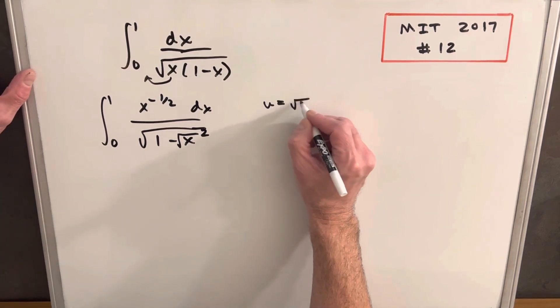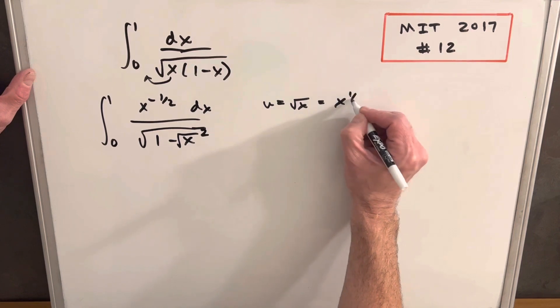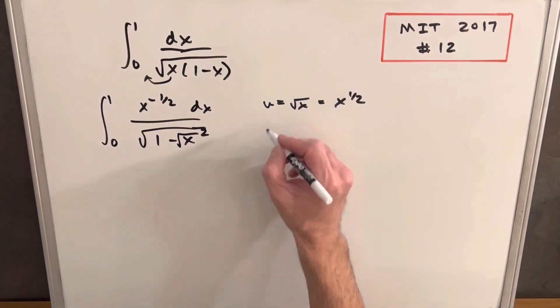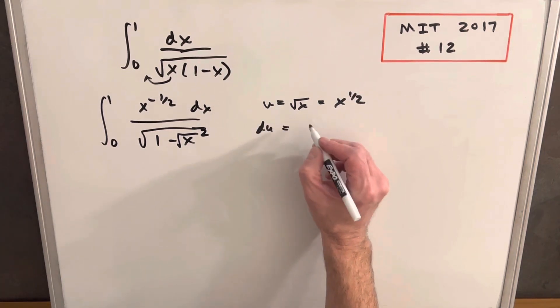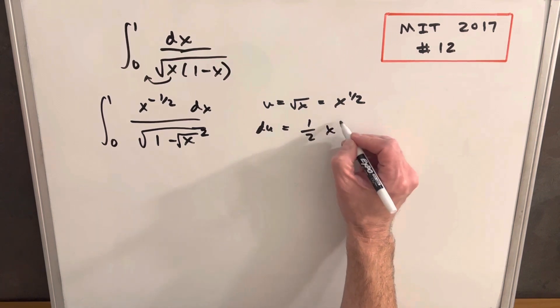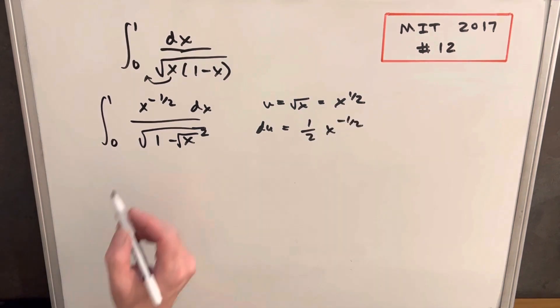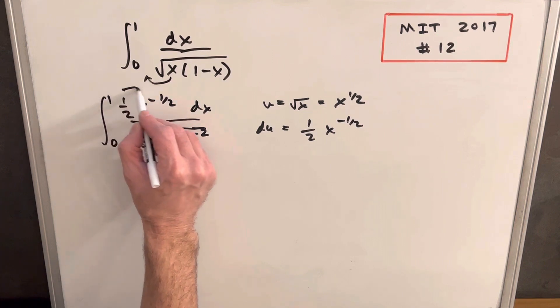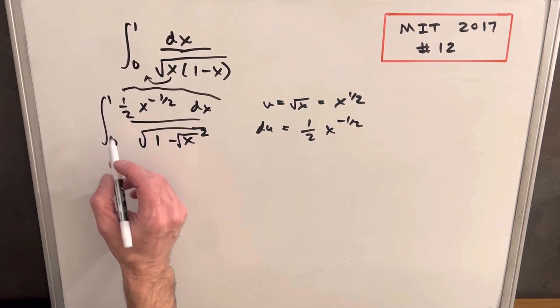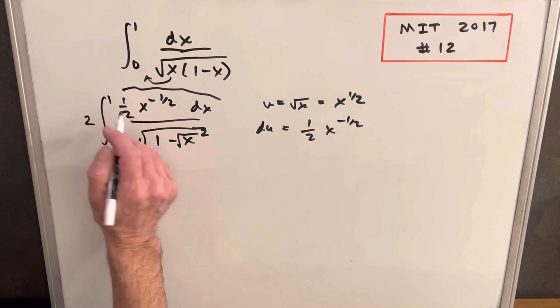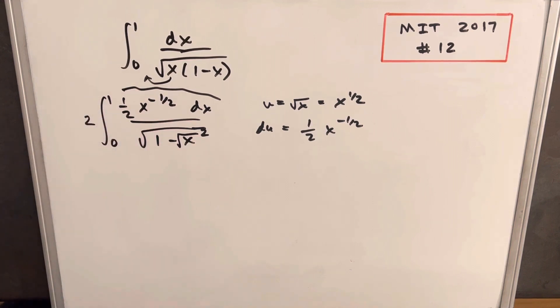For my u, I'm going to take the square root of x, which is the same as x to the 1/2. Then taking the derivative, du is 1/2 x to the minus 1/2. If we add a 1/2 here, now we have exactly our du in the numerator, but we'll put a 2 out front so we're multiplying by 1 and not changing the expression.